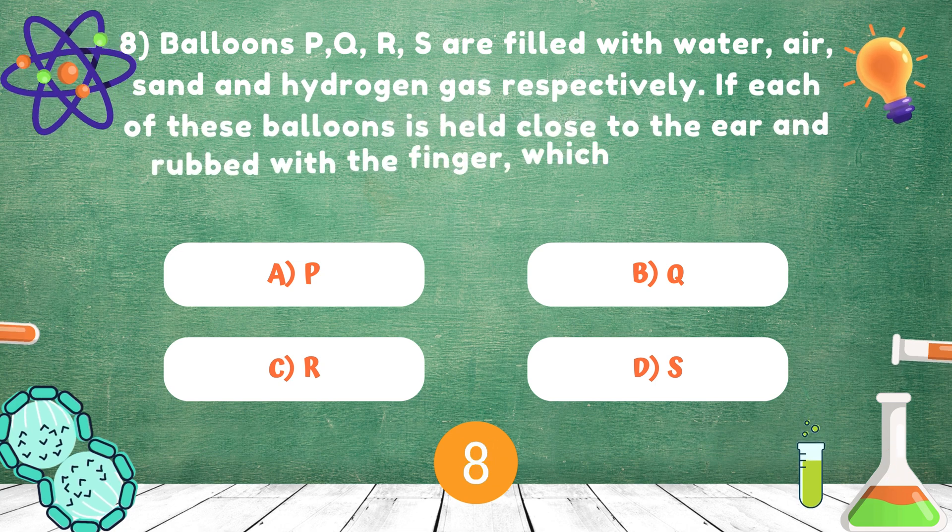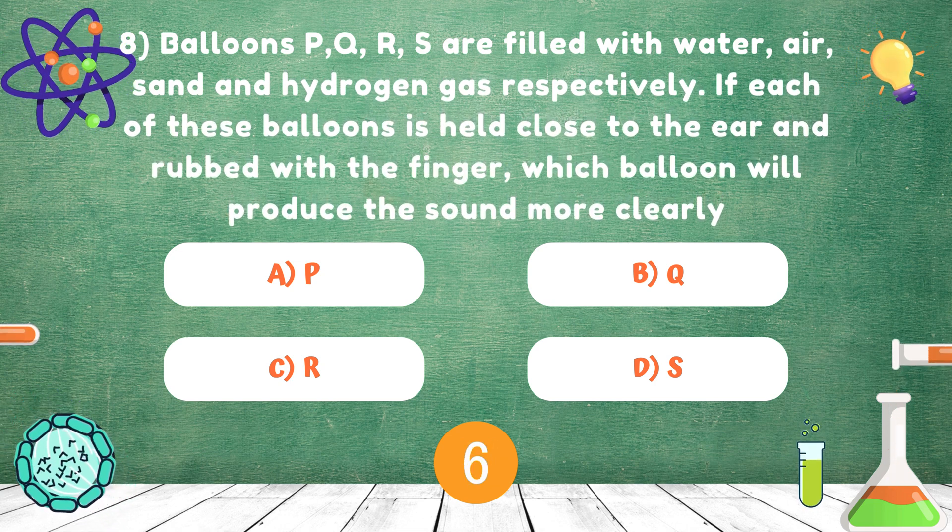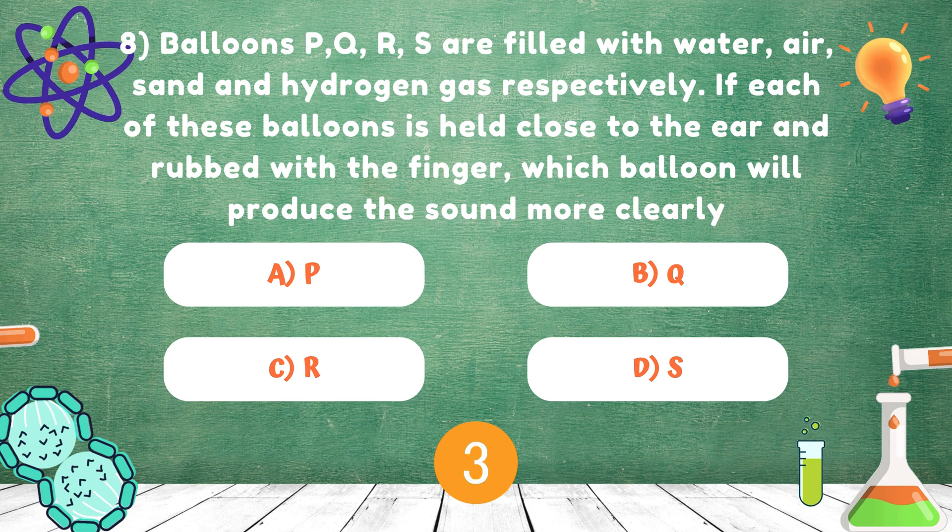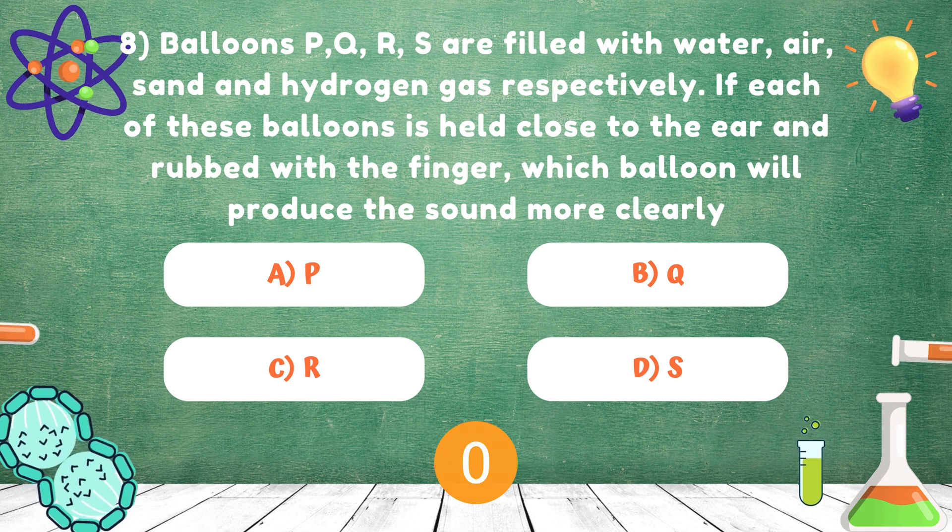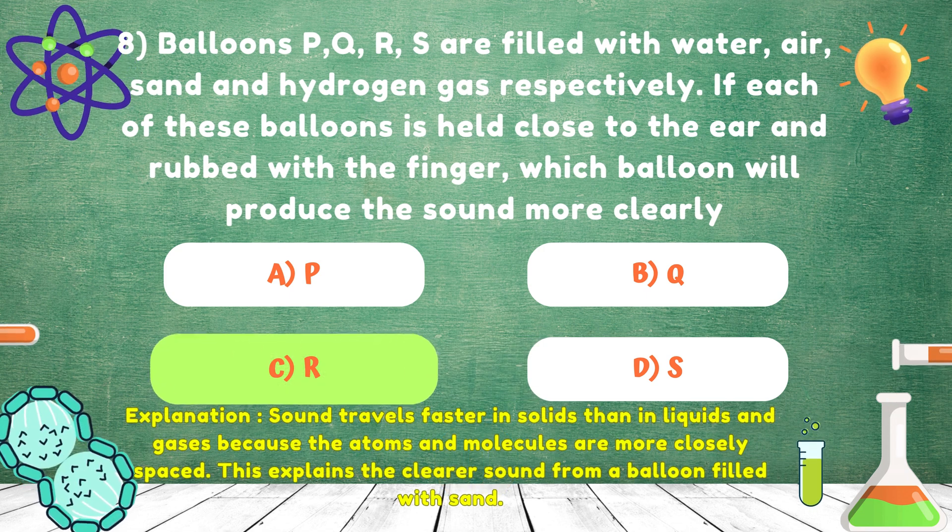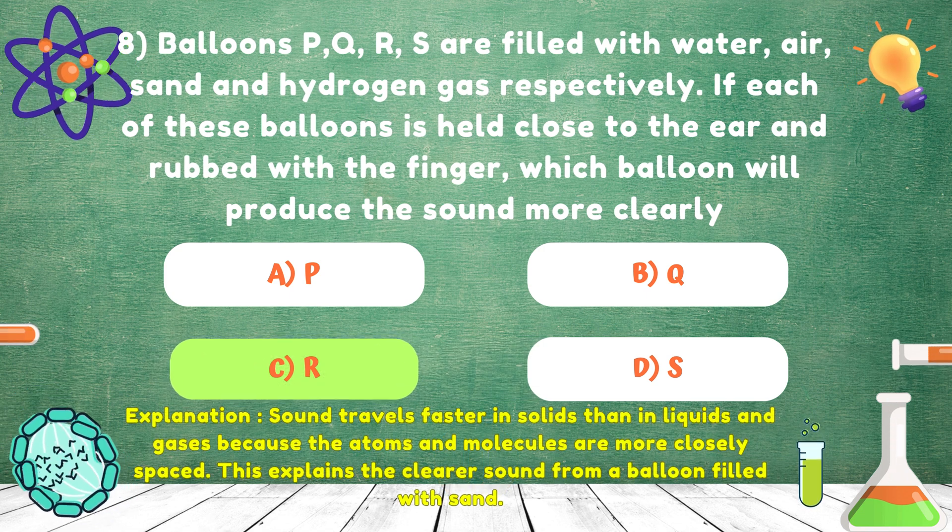Balloons P, Q, R, S are filled with water, air, sand and hydrogen gas respectively. If each of these balloons is held close to the ear and rubbed with the finger, which balloon will produce the sound more clearly? Answer is R.